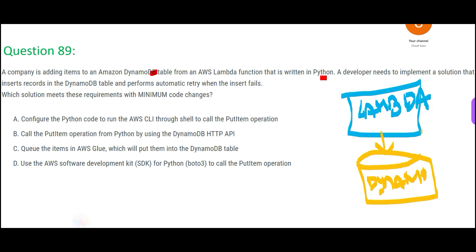Sometimes there are network issues just for microseconds and your insert fails. In most projects using microservice-based architecture, we always ensure that there is a retry built in — we never build applications without retries. The question asks: which solution meets these requirements with minimum code changes?